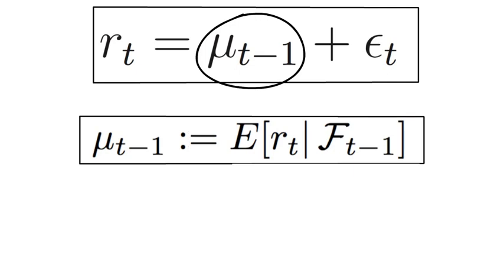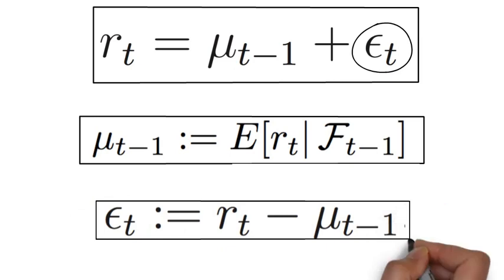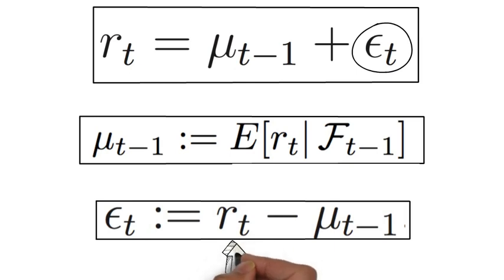So then, what is the unpredictable component epsilon t? Well, that is the realized prediction error, which we write as follows. So the prediction error is the spread between the realized return at time t and your best predictor as of t-1.